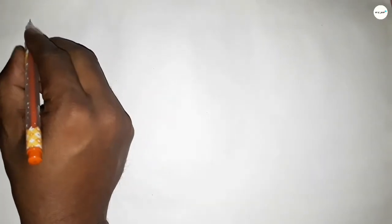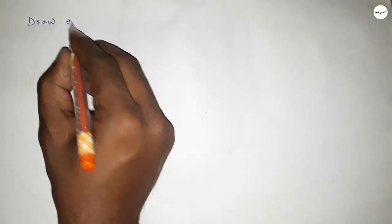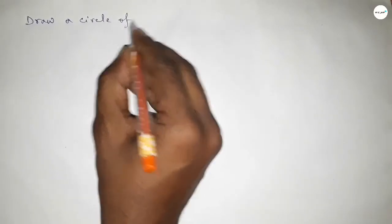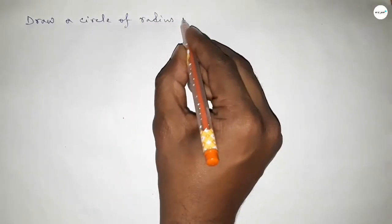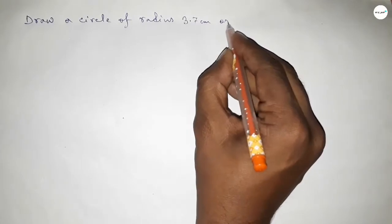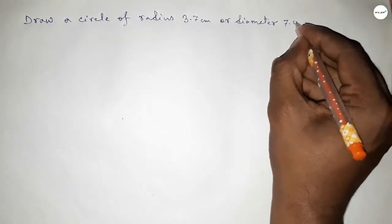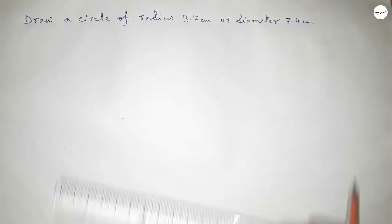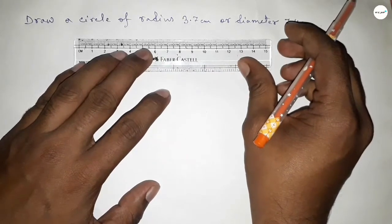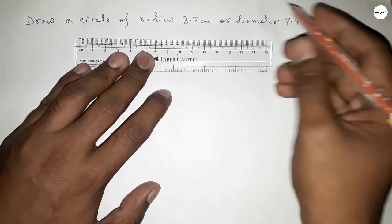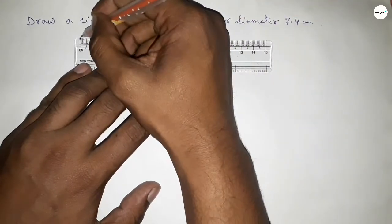Hi everyone, welcome to SHZ classes. Today in this video we have to draw a circle of radius 3.7 centimeter or diameter 7.4 centimeter. So let's start the video. First of all, drawing here the radius 3.7 centimeter.